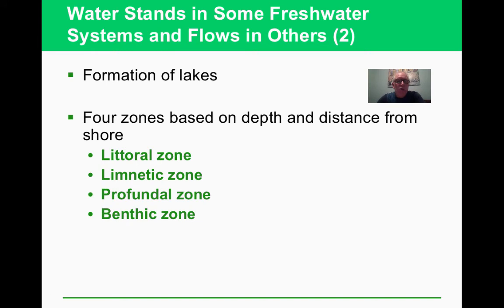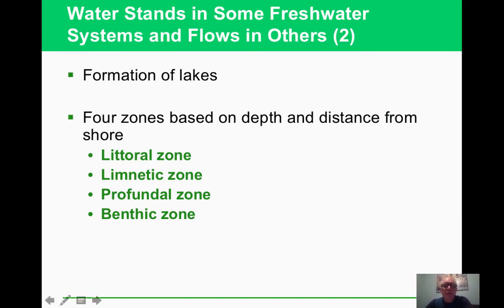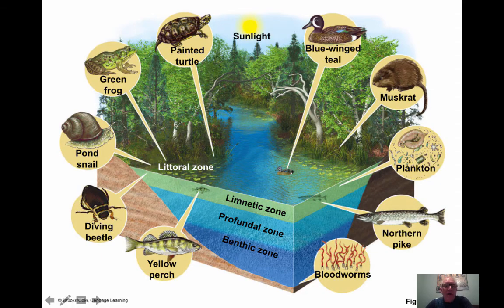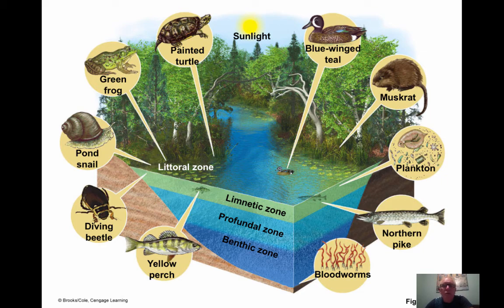We can talk about the different zones in lakes as they form — this is something the AP folks would have you know. The littoral zone is right near the shore. The limnetic zone is where you get the most photosynthesis and probably the most activity. And then the profundal and the benthic zone. These are similar to the layers of the marine systems — these lakes have similar setups.